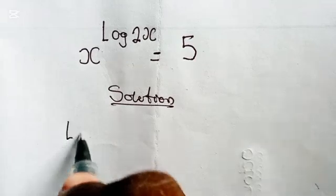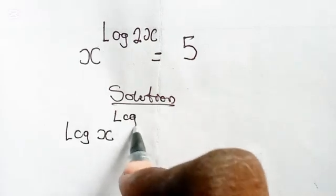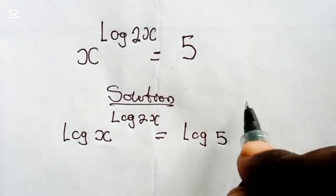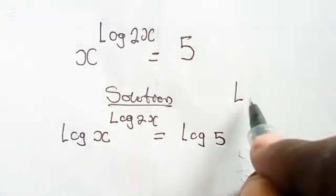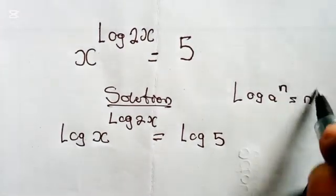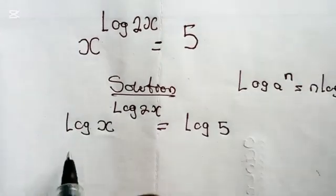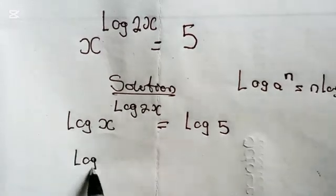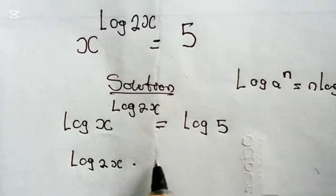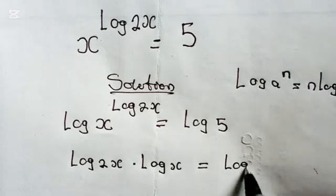So we are going to have log x raised to the power of log 2x equals log 5. Now from the log power property, when you have log a raised to the power of n, we have n log a. So bringing this power down, we are going to have log 2x multiplied by log x equals log 5.